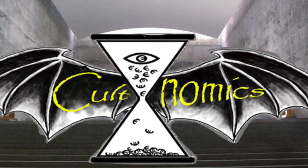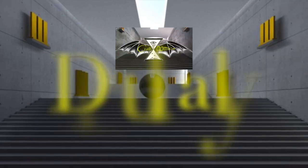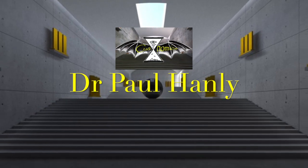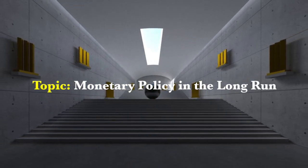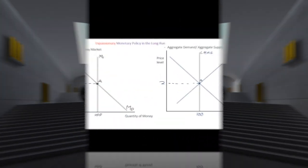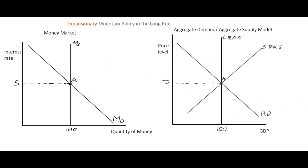Hi guys and welcome to Cultnomics. My name is Paul Hanley and today I'm going to be chatting to you about expansionary monetary policy in the long run. In this video we're going to look at the relationship between the money market and aggregate demand/aggregate supply in the long run, looking at the example of expansionary monetary policy.